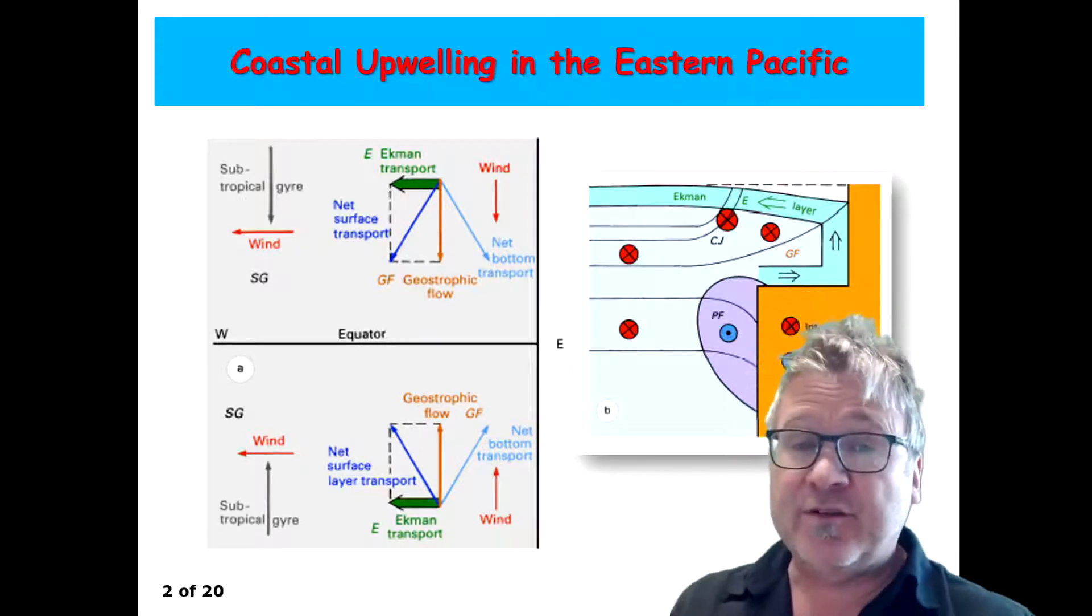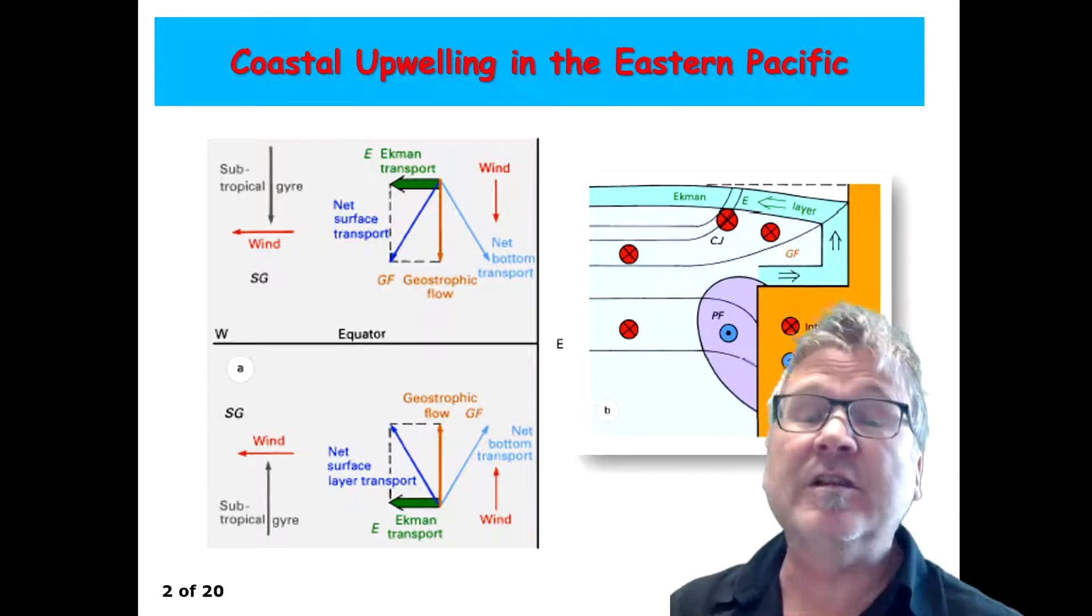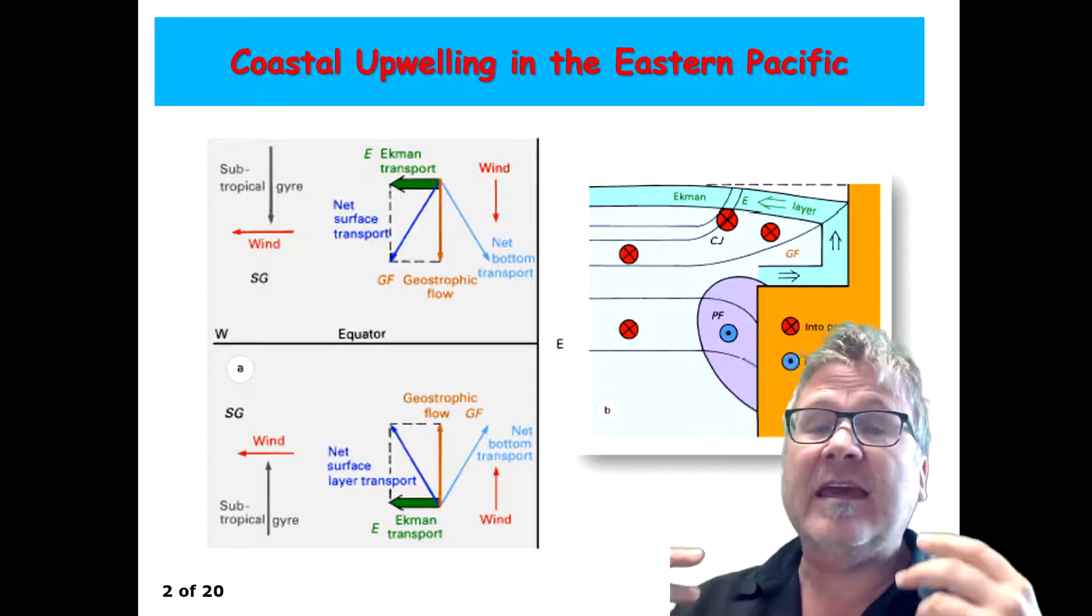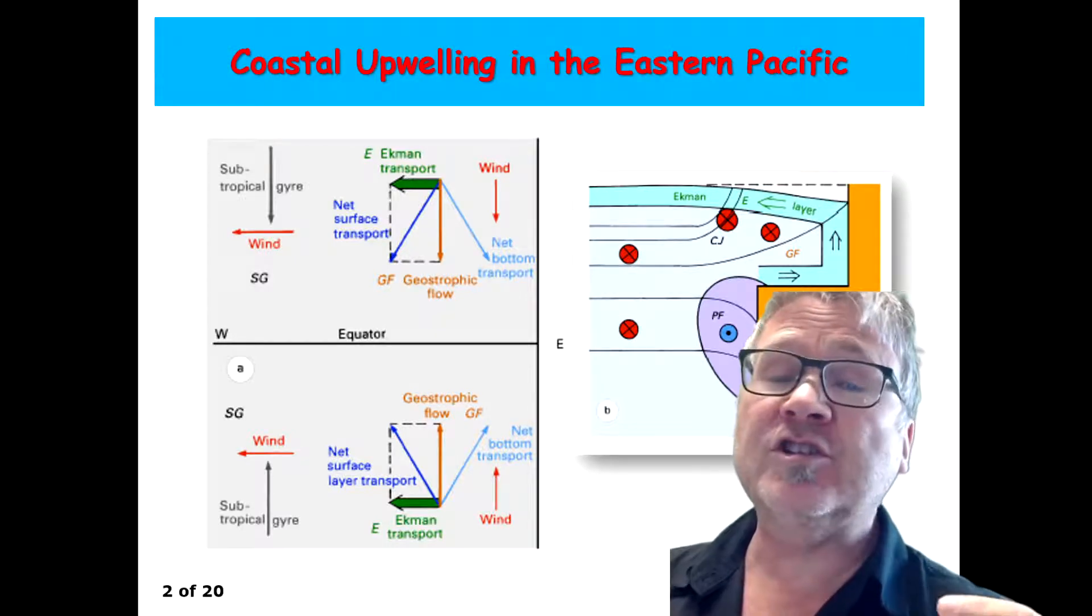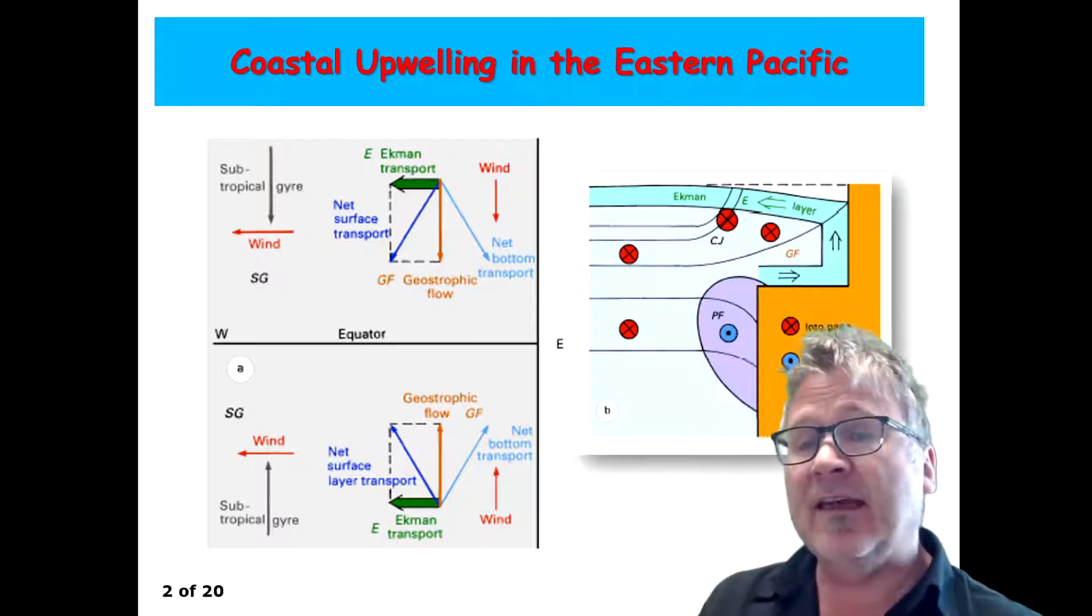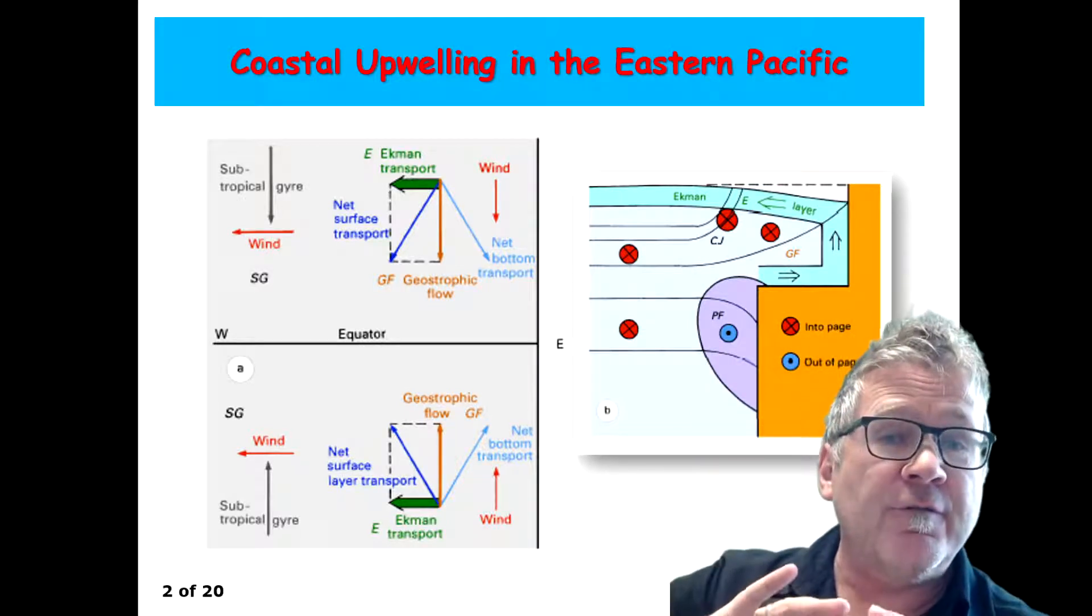And you learned about the Ekman transport. So these winds, what they do is they, in both hemispheres, actually move surface water in the surface Ekman layer away from the coast.